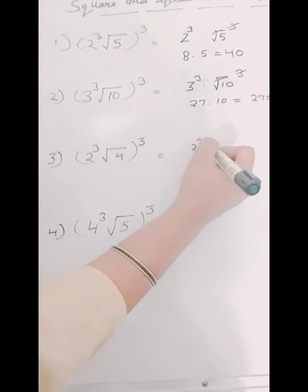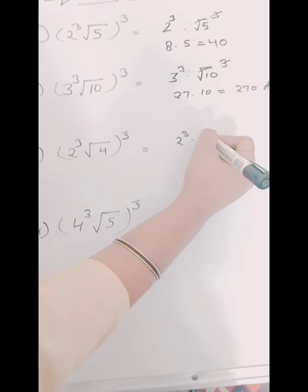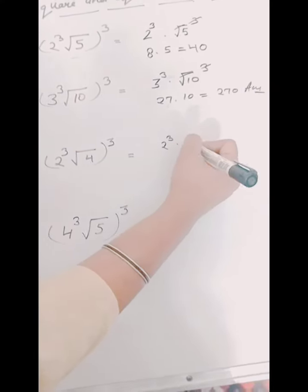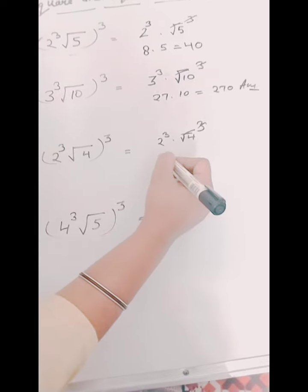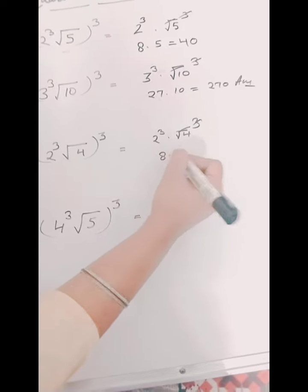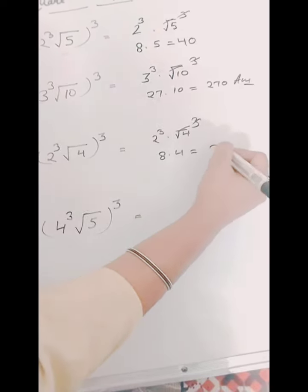So the third question we have is 2 raised to power 3 square root of 2 in bracket raised to power 3. So again we will first cut the brackets and now we will find the cube of 2 which is 8, 8 multiplied by 4 which is equals to 32.